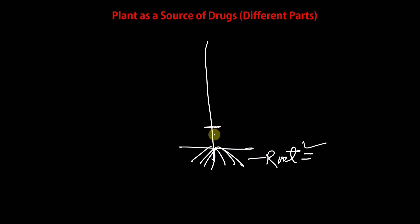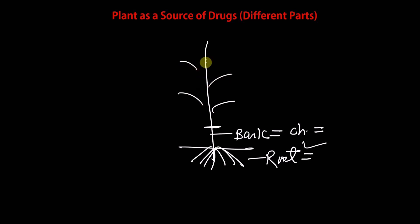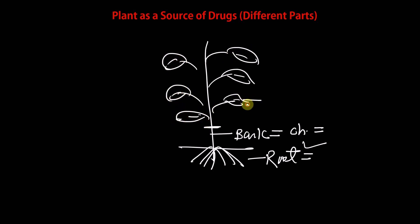The next part is the stem or bark. Examples of drugs obtained from bark include cinchona bark, which gives quinine — used as an anti-malarial drug. Another part of the plant is the leaf. Examples of drugs obtained from leaves include eucalyptus oil, tulsi leaf, and Azadirachta indica — neem — leaves, among many other plants with important medicinal value from their leaf part.